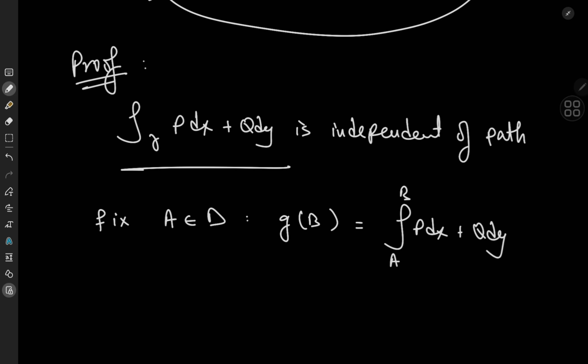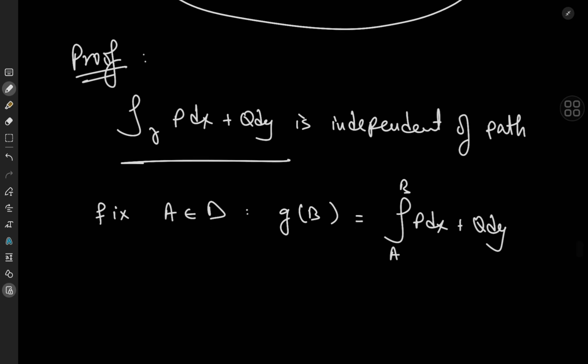Because the integral is independent of path, it doesn't matter which contour you choose to go from a to b. The value of the integral stays the same, so the function here is well defined.